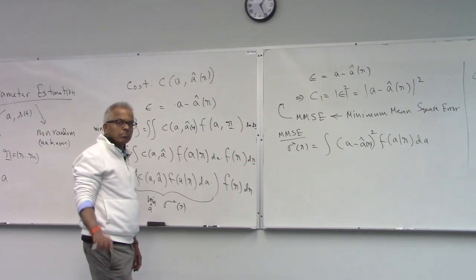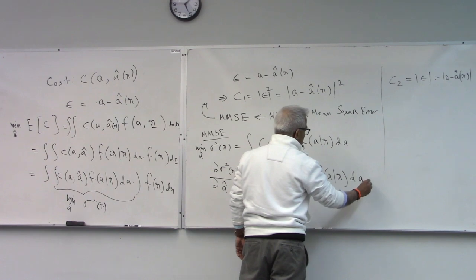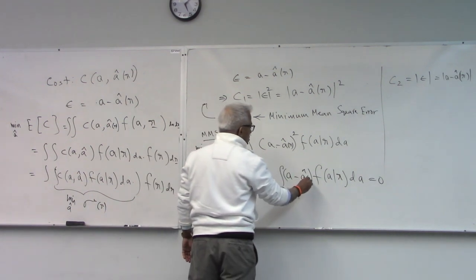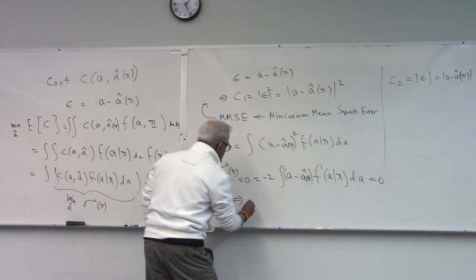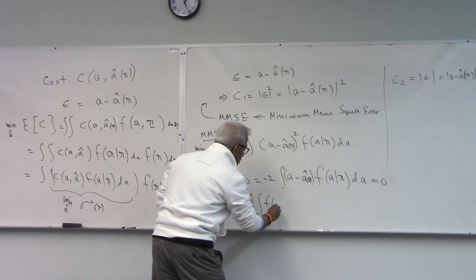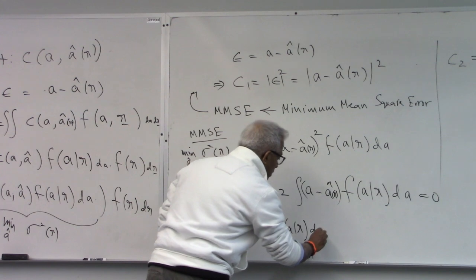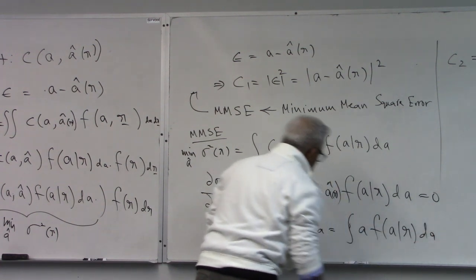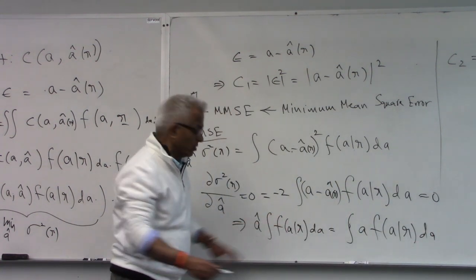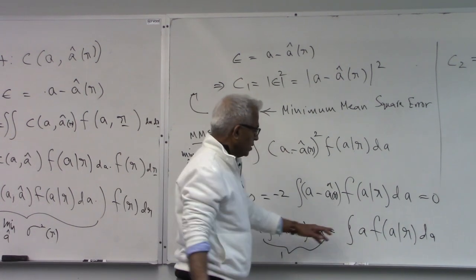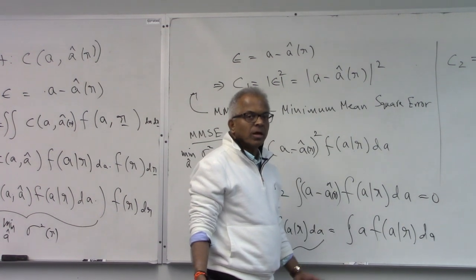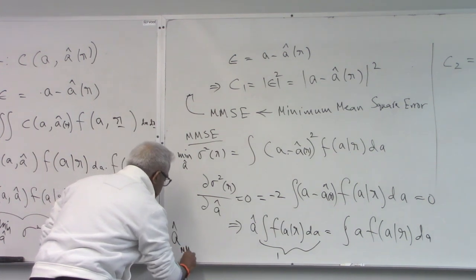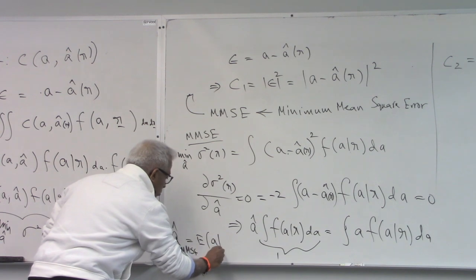We take the derivative with respect to A-hat and set it to zero. This leads to: A-hat times the integral of f(A|R) dA equals the integral of A · f(A|R) dA. The left-hand side integral is 1 — it's the area under a density function. So we get A-hat MMSE equal to the conditional mean of A given R. This is the classic result.